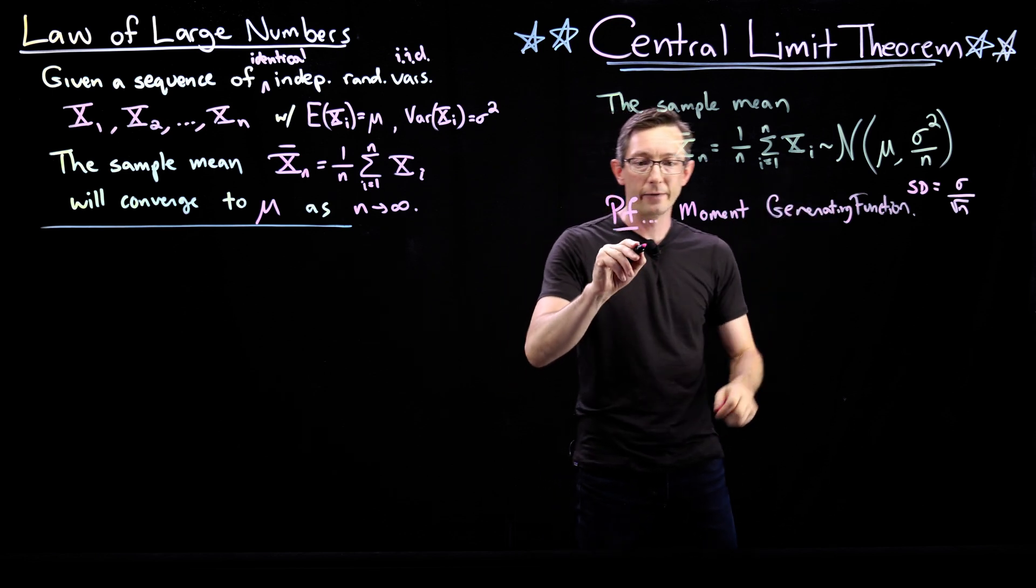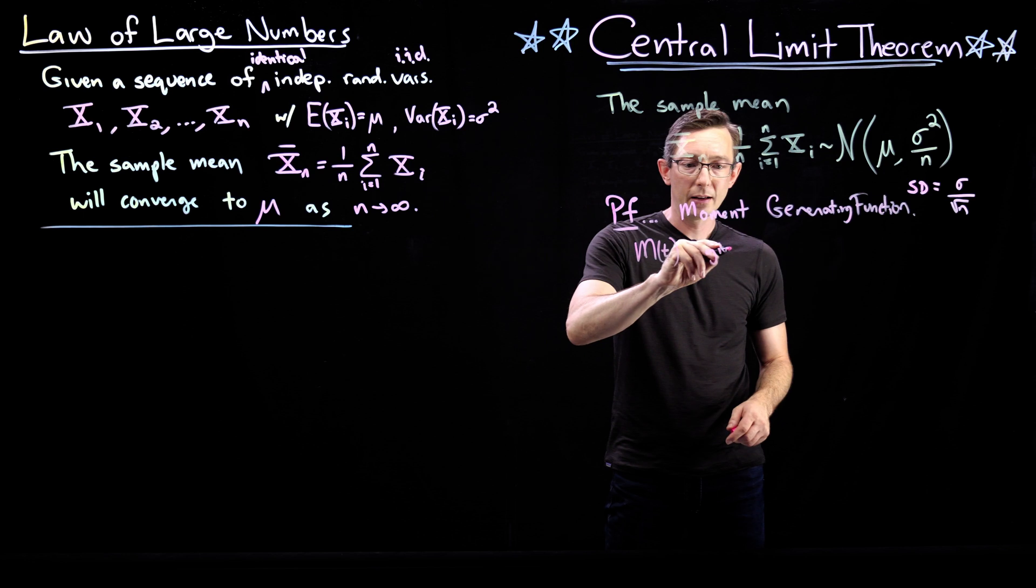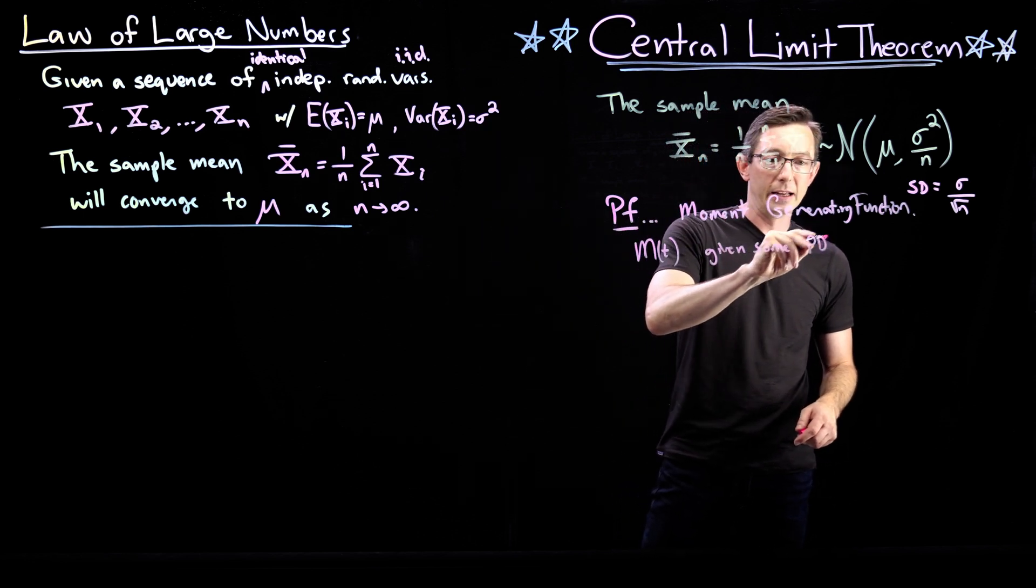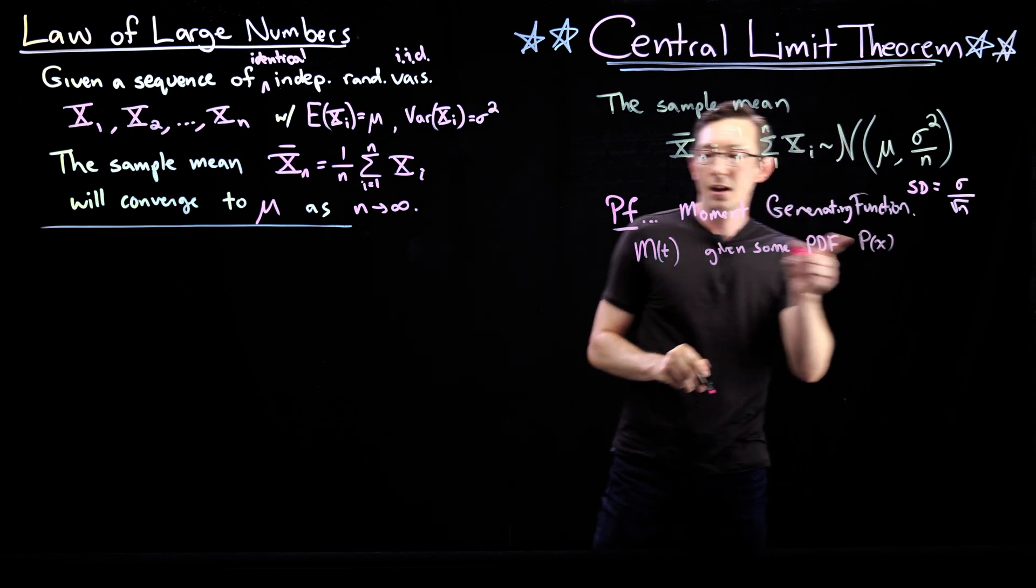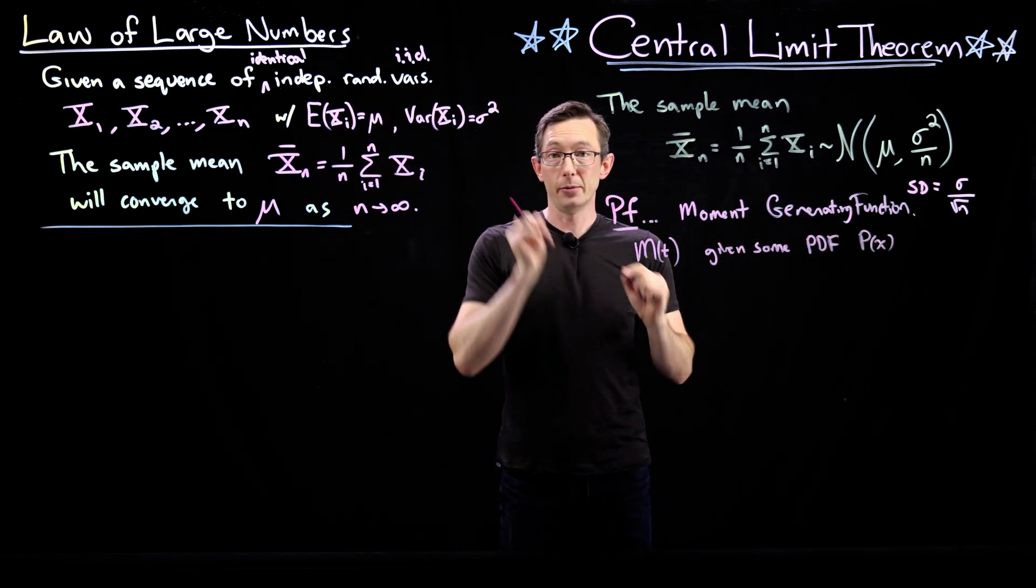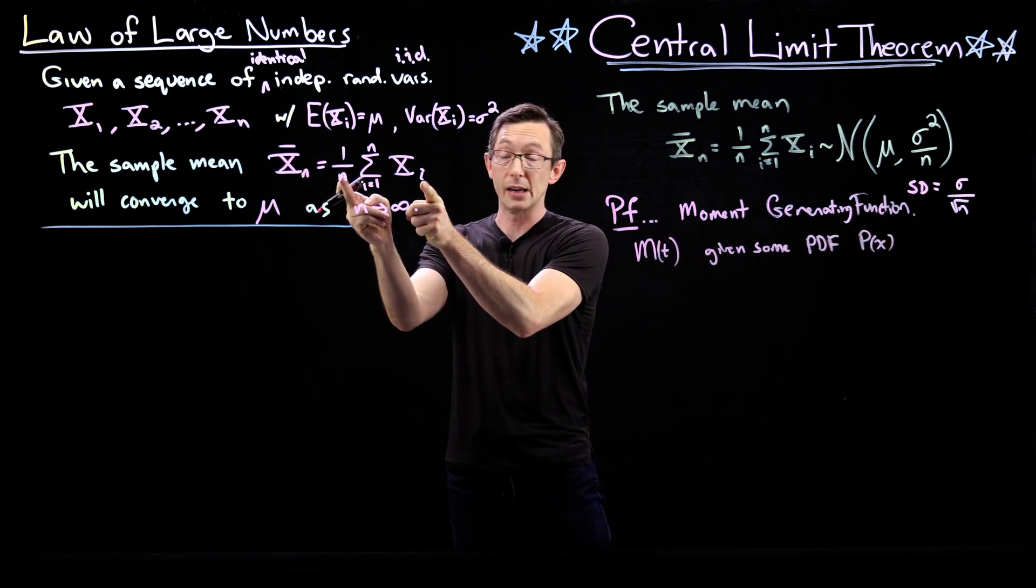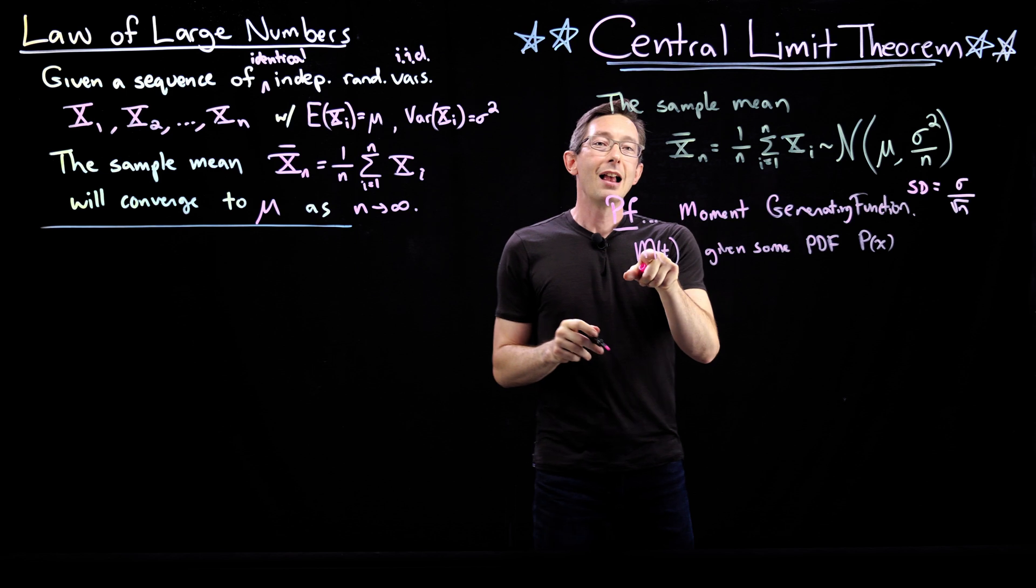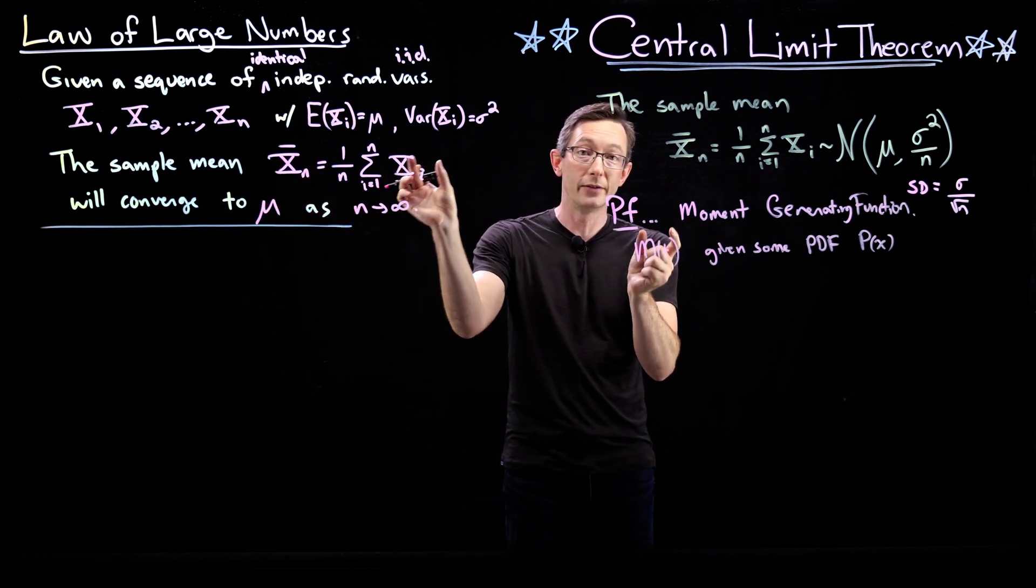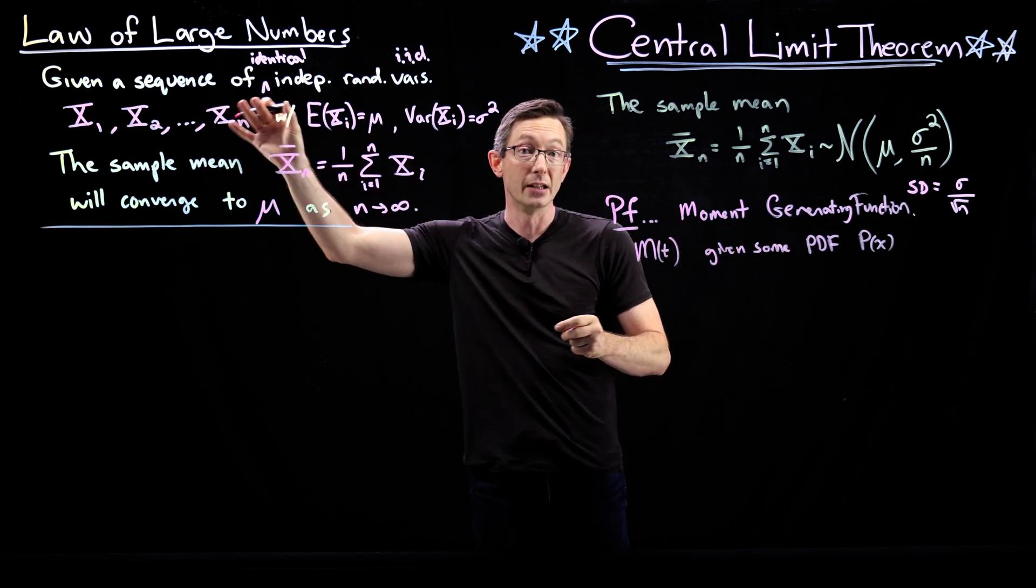Let's say the moment generating function is called M of T given some probability distribution, some PDF P of X. Then if I have the sum of a bunch of random variables, this XN is essentially the weighted sum of a bunch of random variables, then the moment generating function of that sum is the product of the individual moment generating functions of the individual independent trials.